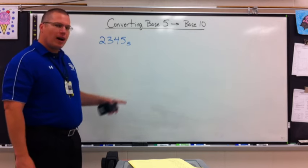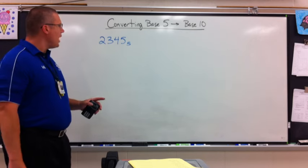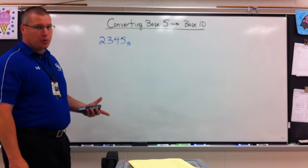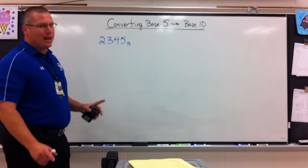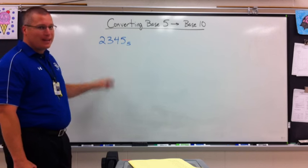2, 3, 4, 5, base 5. I cannot read it 2,345, it's not true. That's a base 10 idea. 2, 3, 4, 5, base 5. Now, there is something wrong with this number. Do you see it?